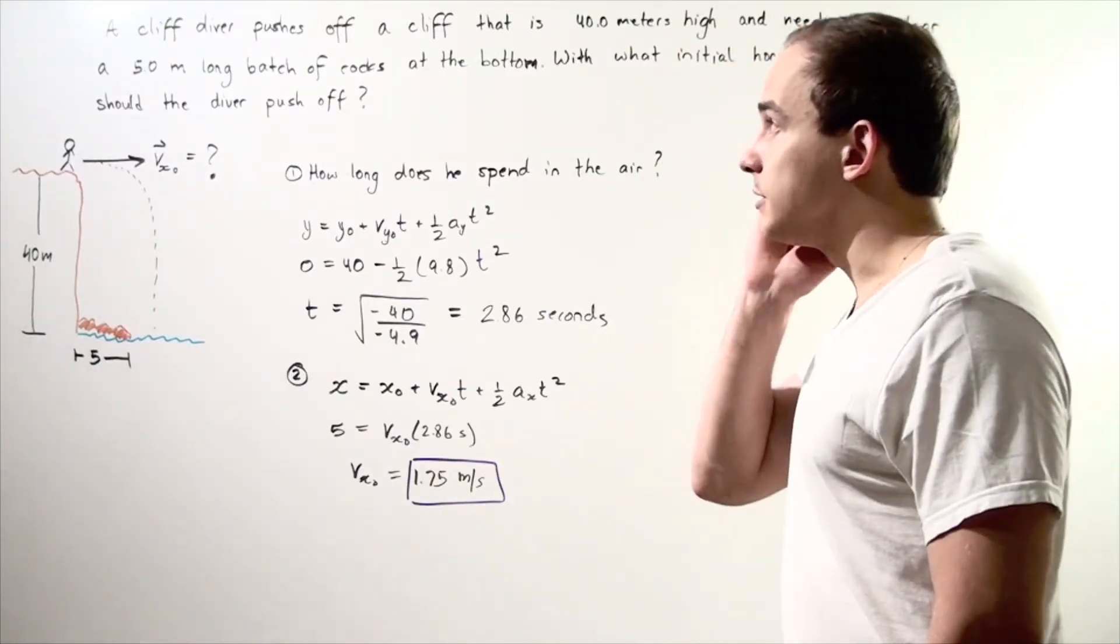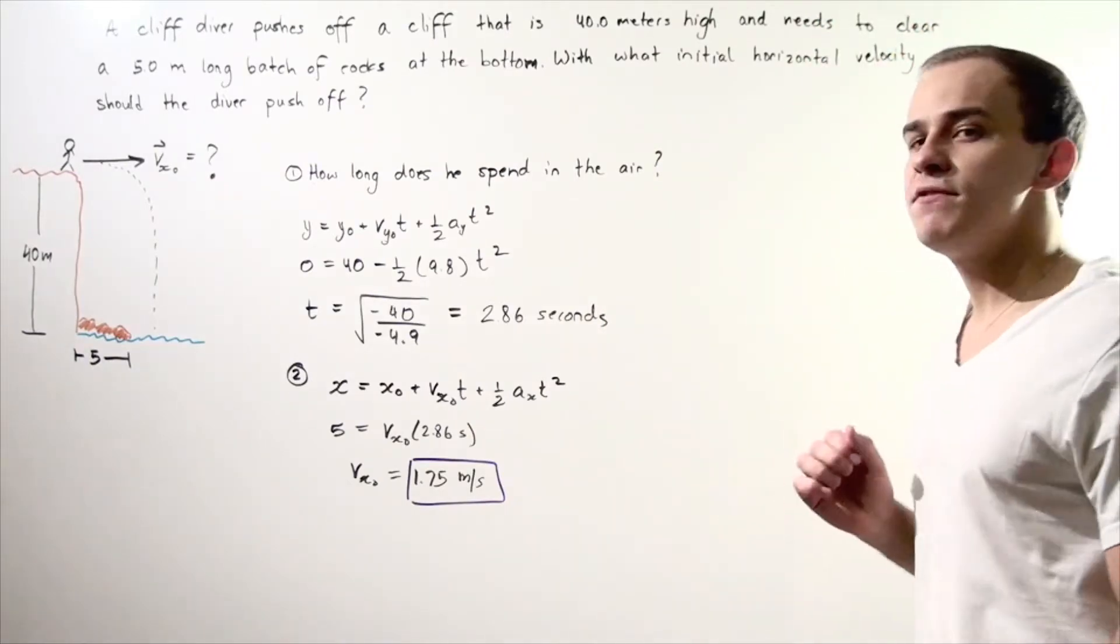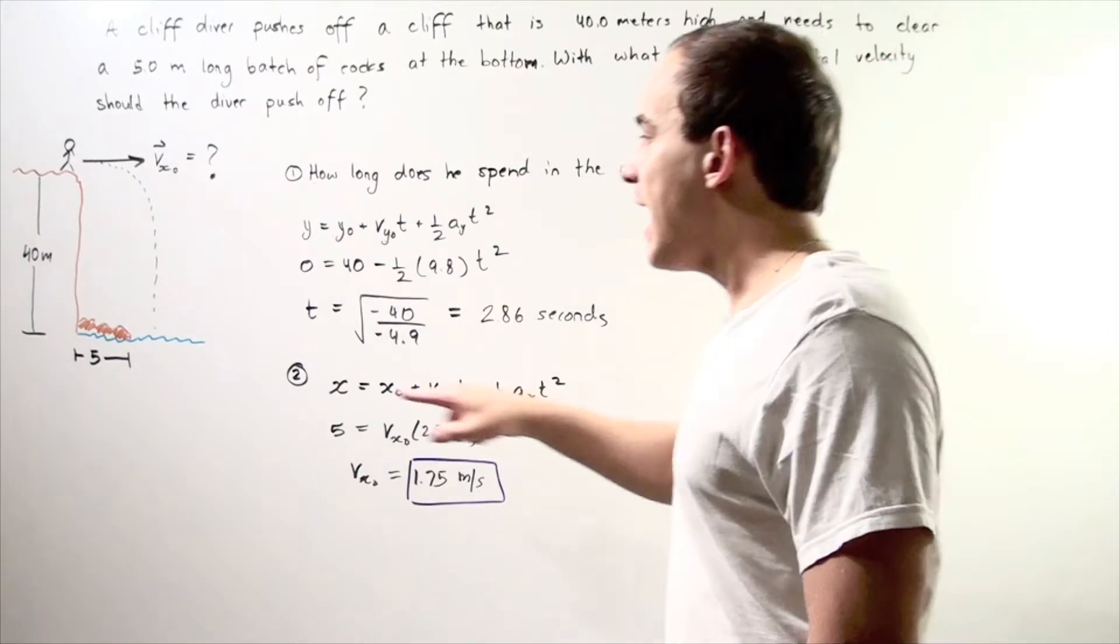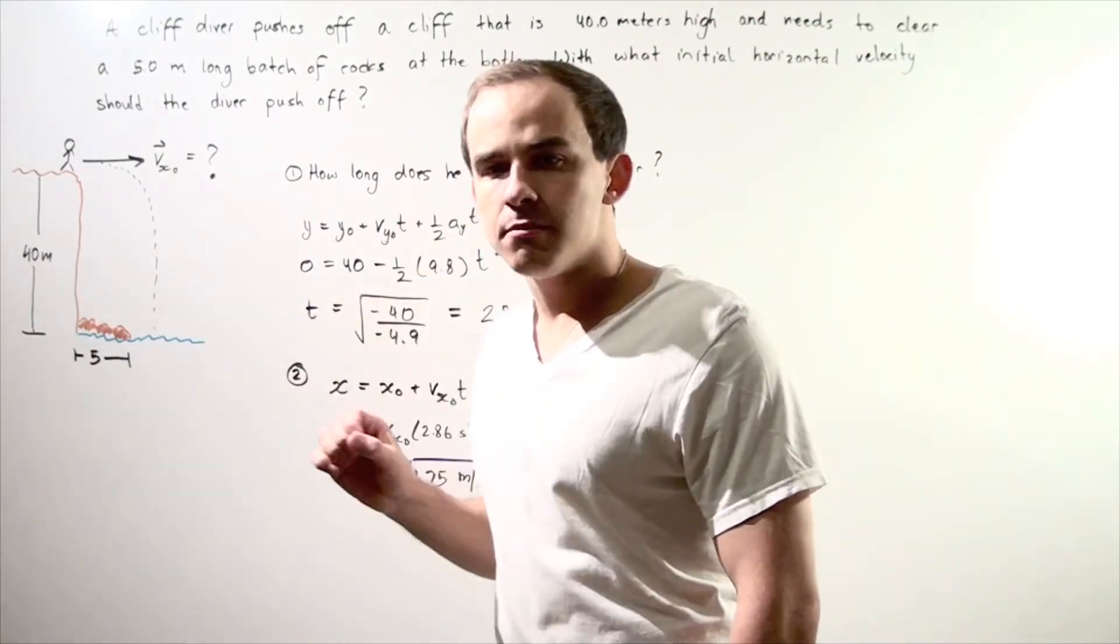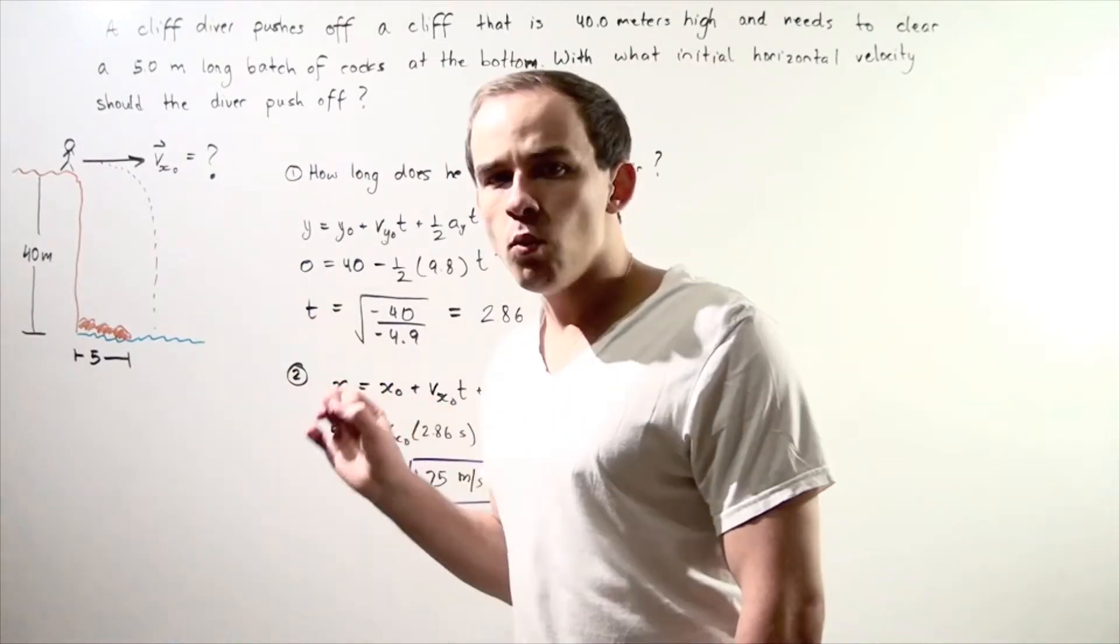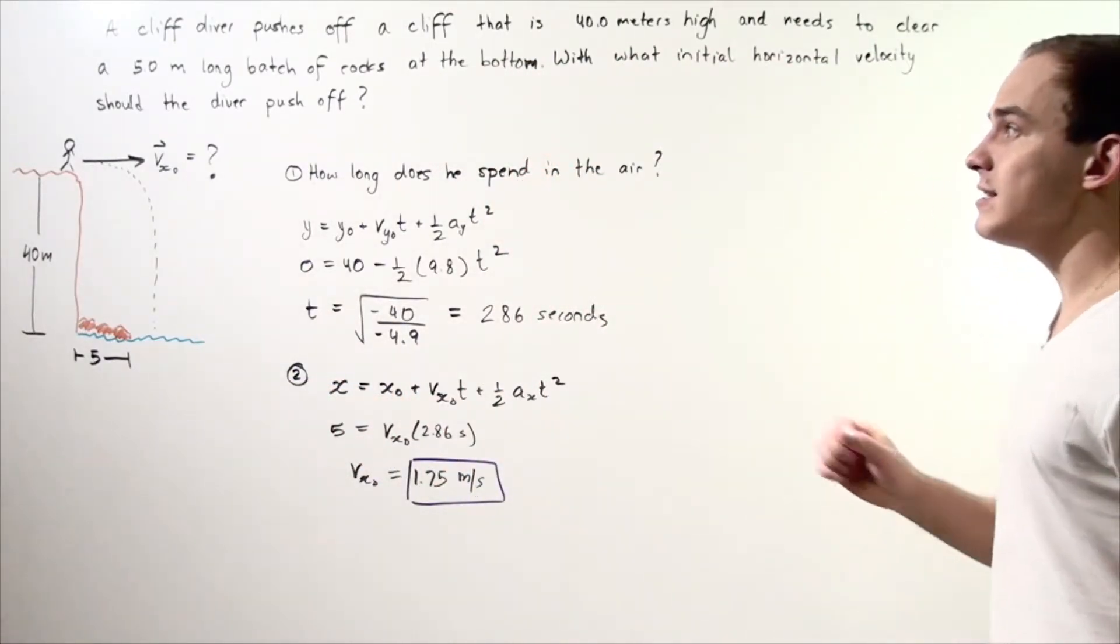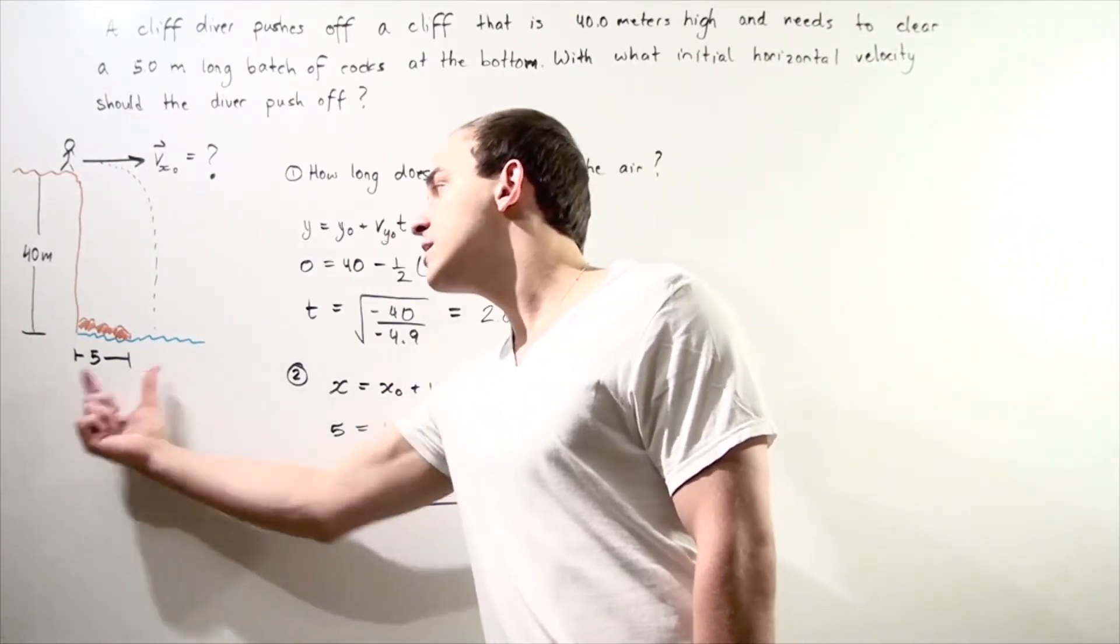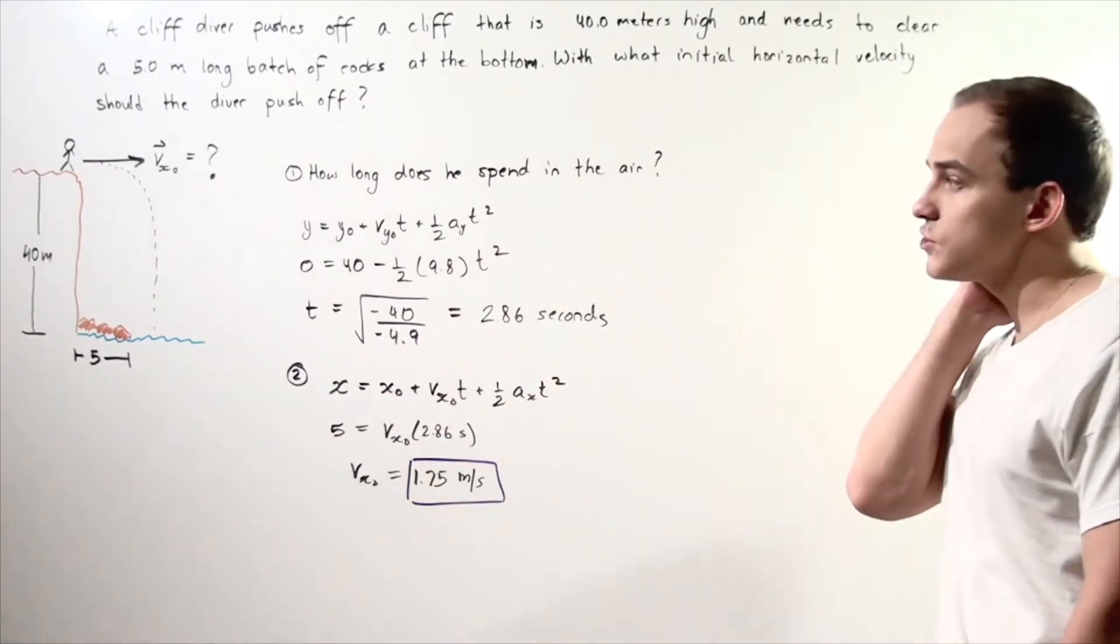Let's look at the following example. Let's suppose a cliff diver pushes off a cliff that is 40 meters high and needs to clear a 5 meter long batch of rock found at the bottom of the cliff. We want to find with what initial horizontal velocity should the diver push off in order to clear this 5 meter long batch of rock.